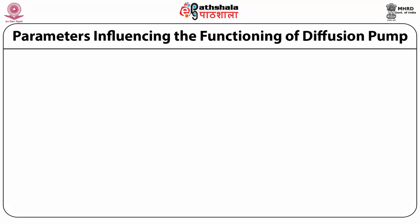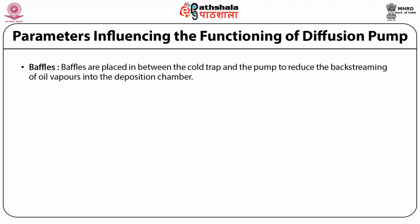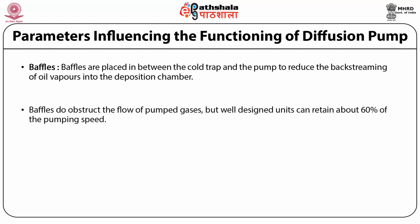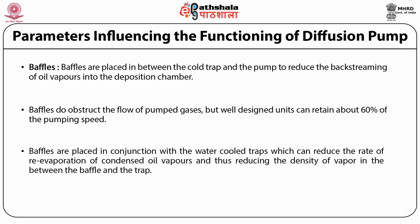The fourth parameter is baffles. Baffles are placed in between the cold trap and the pump to reduce the back streaming of oil vapors into the deposition chamber. Baffles do obstruct the flow of pumped gases but well-designed units can retain about 60 percent of the pumping speed. Baffles are placed in conjunction with the water-cooled traps which can reduce the rate of re-evaporation of condensed oil vapors and thus reducing the density of vapor between the baffle and the trap.